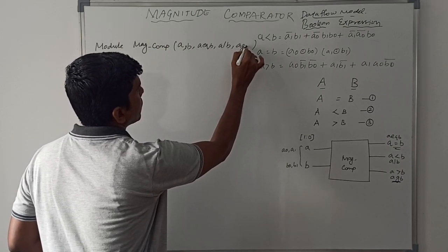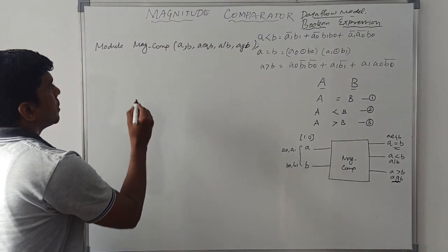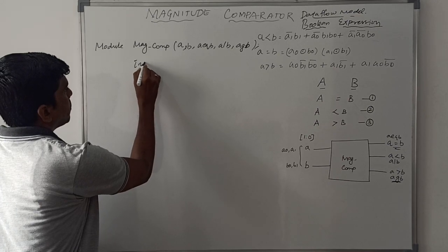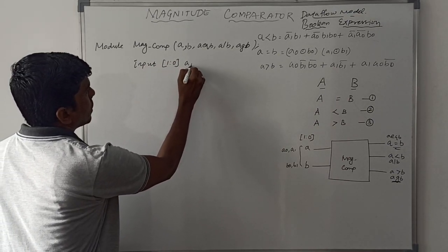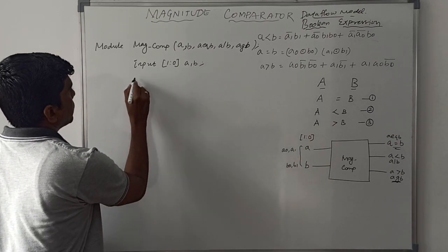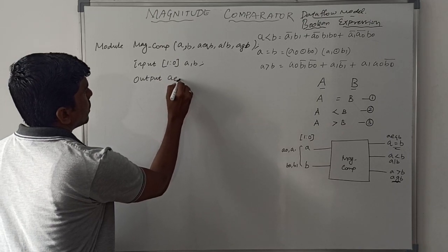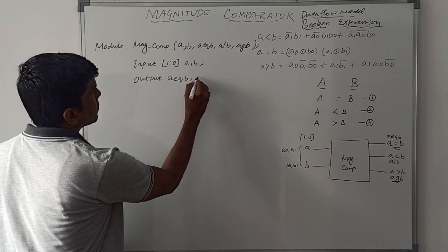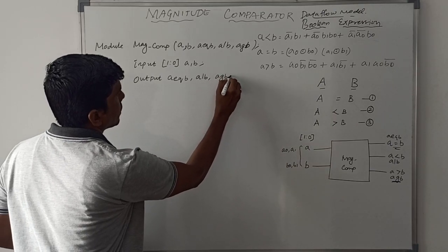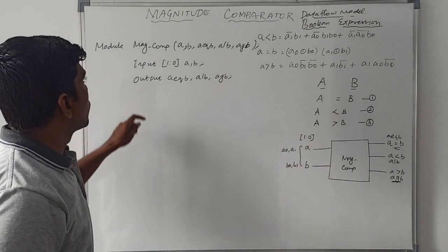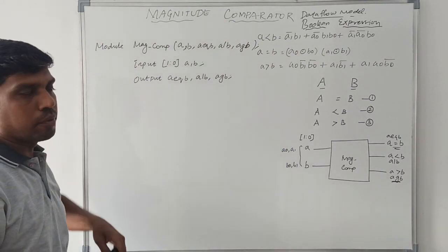The input is declared as a 2-bit value: input [1:0] A, B. Then declare the outputs: output A equal to B, output A less than B, and output A greater than B. After initializing the module and its ports, proceed with the declaration of input and output variables.